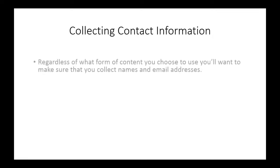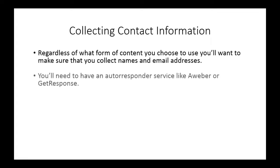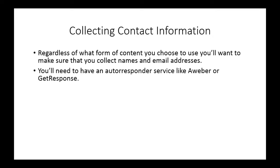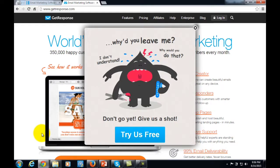Welcome back to Alternative Authority Content. In this video, we're going to discuss the most important aspect of converting content into prospects and buyers — collecting contact information. Regardless of what form of content you use — blog, video, or audio — you want to make sure you're collecting names and email addresses of people who come in contact with your content. To do this, you'll need your own autoresponder service like Aweber or GetResponse, both of which you can try for free or with a 30-day trial.